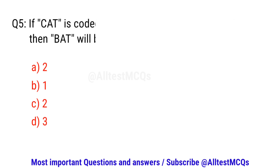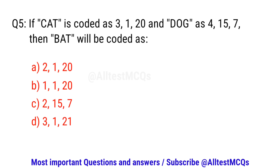Question number five. If CAT is coded as 3, 1, 20 and DOG is coded as 4, 15, 7, then BAT will be coded as? The right option is A. 2, 1, 20.